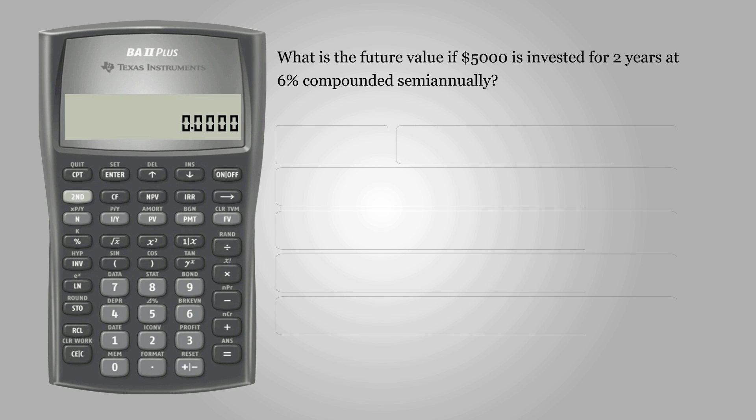First we need to set all variables to defaults, so press 2nd and FV to clear TVM, or time value of money. Then we need to set CY, which is the number of compounding periods per year, so press 2nd, IY, and then the downward arrow to set the CY.